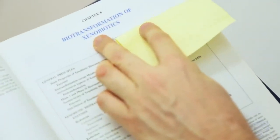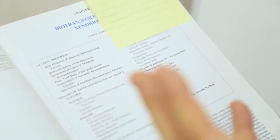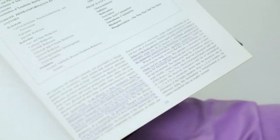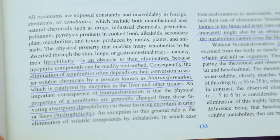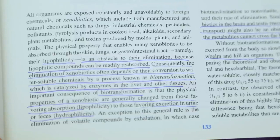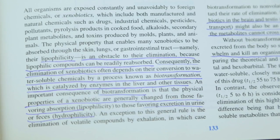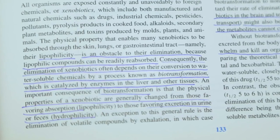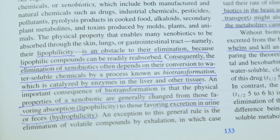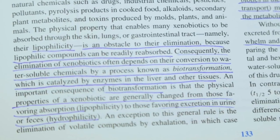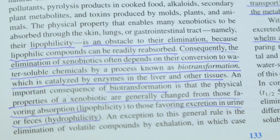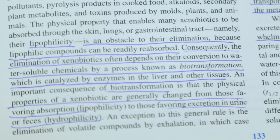So now check this out. Biotransformation of xenobiotics. What does that mean? It's a fancy term for the elimination of chemicals from the body. So your body has the ability through the liver and through the enzymes to get rid of poisons. And the unique thing that you need to know about is that these poisons are fat-soluble. They're not water-soluble. So they get stuck in the fat cell. And that is an obstacle to their elimination because lipotropic, which means chemicals that get stuck in the lipids or fats, lipotropic compounds can be readily reabsorbed. Consequently, the elimination of xenobiotics, that's chemicals, often depends on their conversion to water-soluble chemicals by a process known as biotransformation.